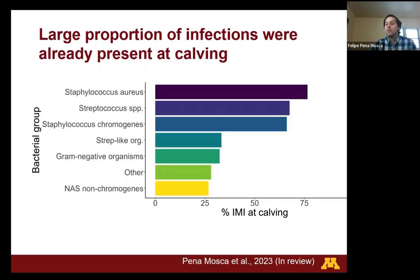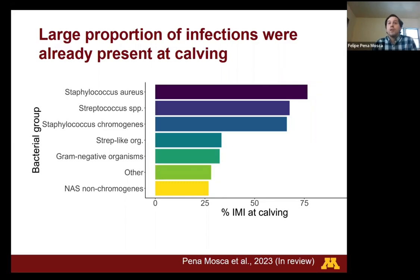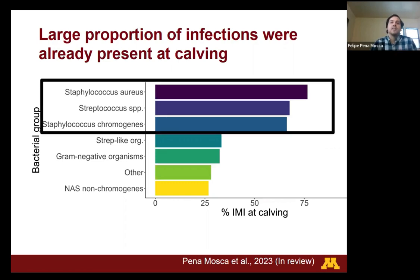We are identifying which animals may be at higher risk, but the next question is: when did these cows acquire the intramammary infection? On this slide, the y-axis represents the different bacterial groups found during the follow-up period, and the x-axis shows the proportion of intramammary infections that were already present in the first week after calving, meaning they were likely acquired before calving. For some microorganisms such as Staph aureus, Strep species, and Staph chromogenes, almost 75% of infections were already present at calving.